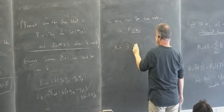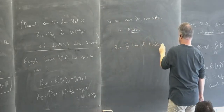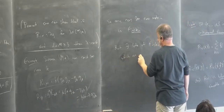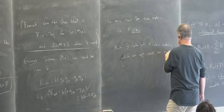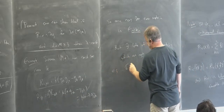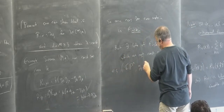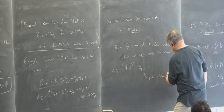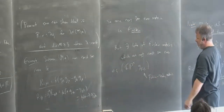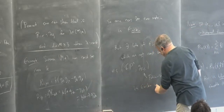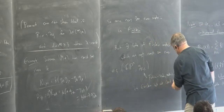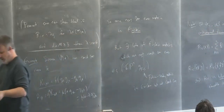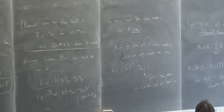But there exist lots of Einstein metrics which are not constant sectional curvature. For example, complex projective space CP^N with the Fubini-Study metric. If you know anything about Kähler geometry, this is the standard Kähler metric on CP^N, and it is Einstein but not of constant sectional curvature. Einstein metrics are a very important class of Riemannian metrics, though it's not the focus of this course.